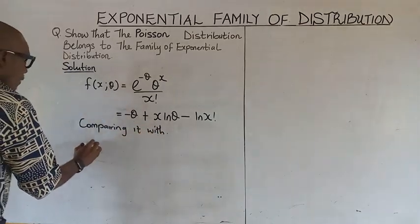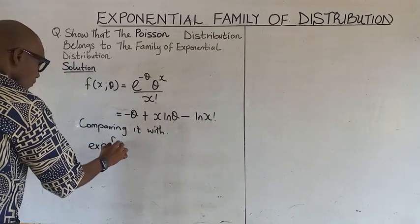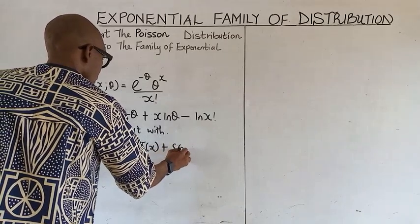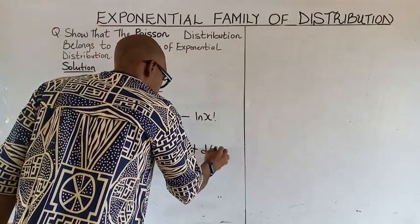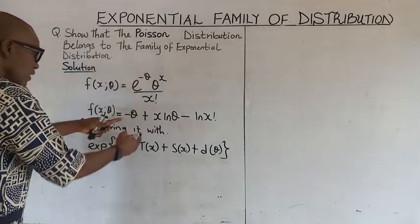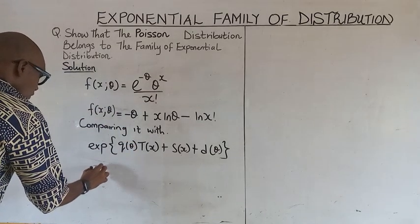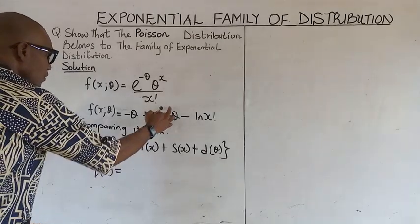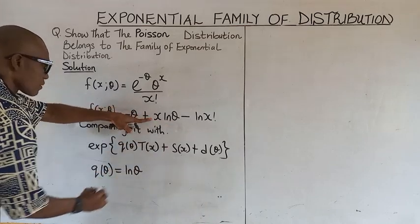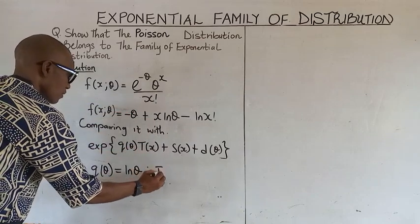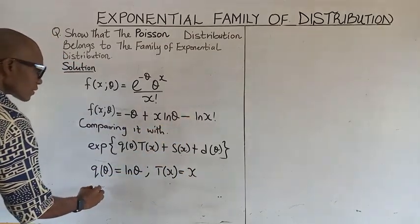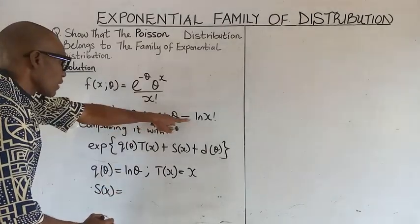We will compare this with the standard exponential family form. Comparing, we identify: Q(θ) here is theta, T(x) is just x, and h(x) is negative ln of x factorial.